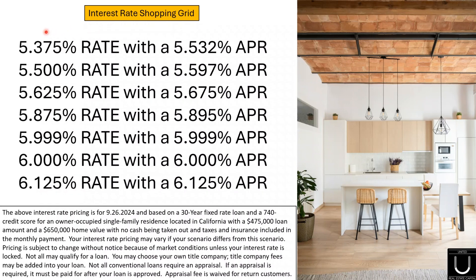I've created a shopping grid for you so you can take this and go around shopping today, tomorrow, and over the weekend. This is for today, 9/26 Thursday. The rate pricing does change daily throughout the day, but tomorrow Friday it's not going to fluctuate much if any, and it's not going to change over Saturday and Sunday. That's why I'm putting this out on Thursday so you can have almost four days to do some shopping. I'll tell you in a second why I have multiple rates here instead of one and how this is going to help you — it's centered around the APR.